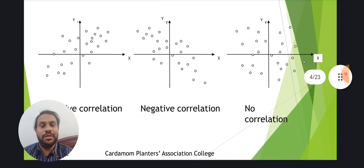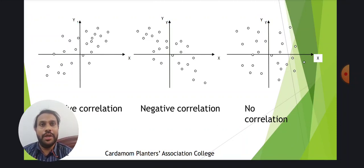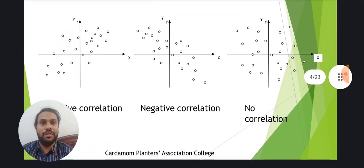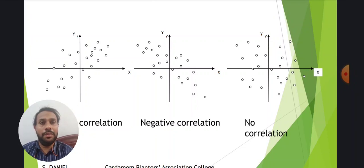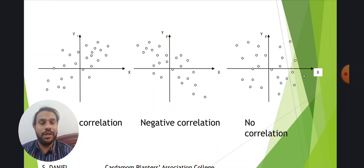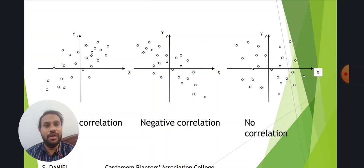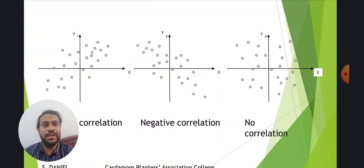If you consider these scatter diagrams — in the first scatter diagram, all the points are closely aligned towards the positive quadrant. If you draw a line, it points towards the positive quadrant of the graph, so we call this positive correlation. In the second example, all the points are oriented towards the negative quadrant, so we call this negative correlation. In the third example, the points are scattered all around the graph and we cannot draw a single line to connect them, unlike the first two examples. So we say there is no correlation.